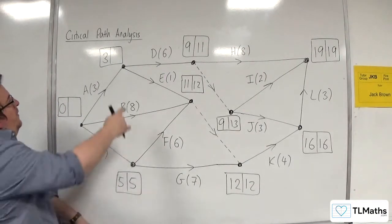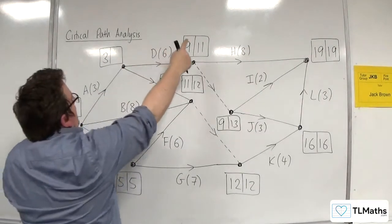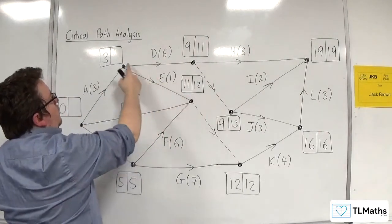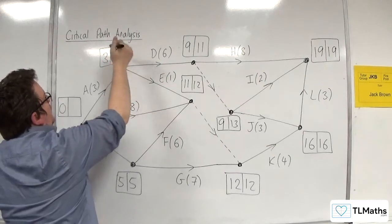So let's do this one now. 11 take away 6 is 5, or 12 take away 1 is 11. So that's got to be 5.